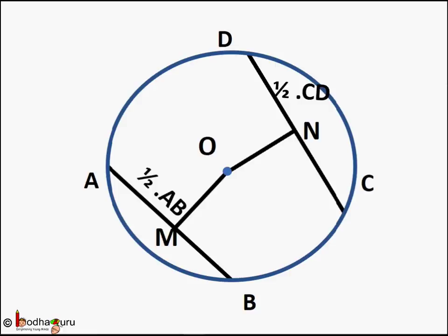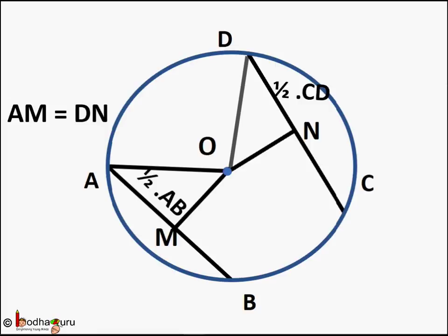Let's do that. AB is equal to CD — we are given. We draw perpendiculars OM and ON from the center O, and we learned earlier that these perpendiculars bisect the chords. So AM will be half of AB and DN will be half of CD. As the two chords are equal, their halves will also be equal — this means AM is equal to DN.